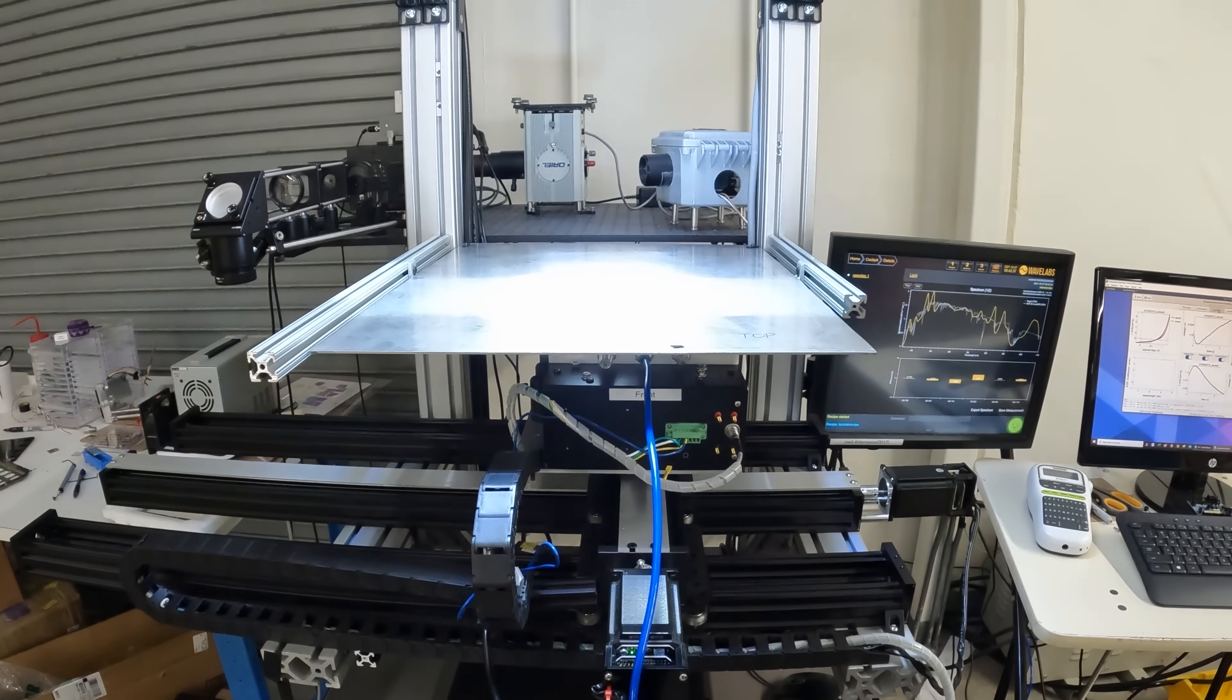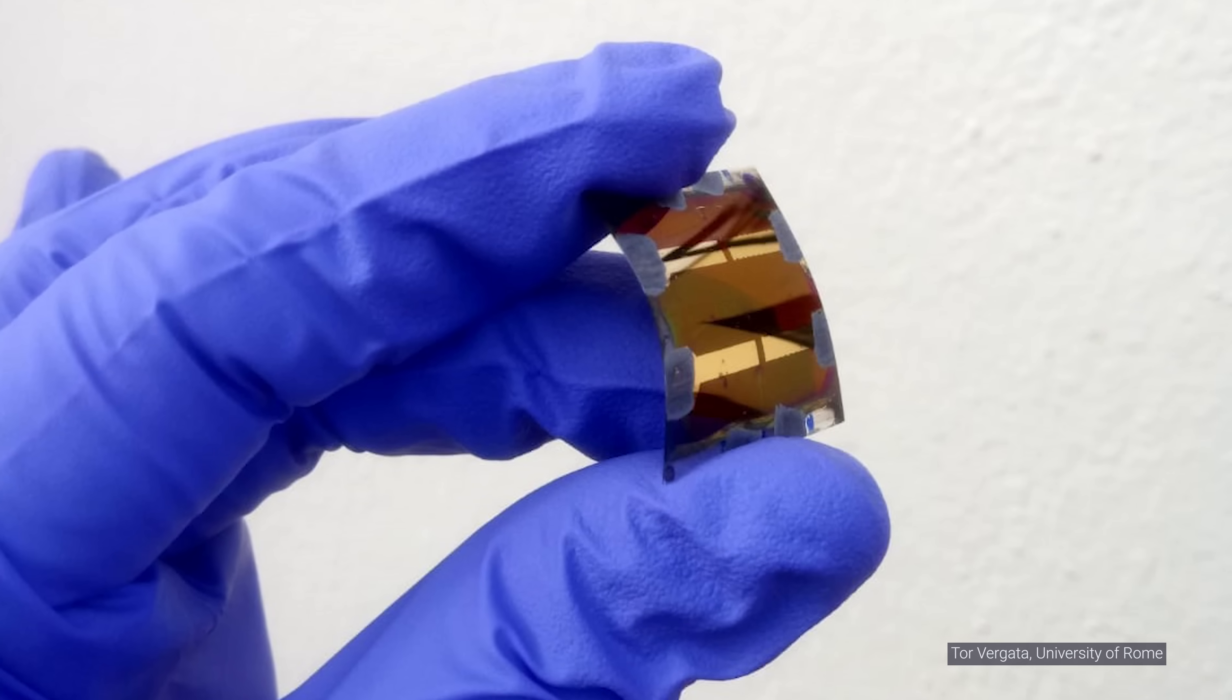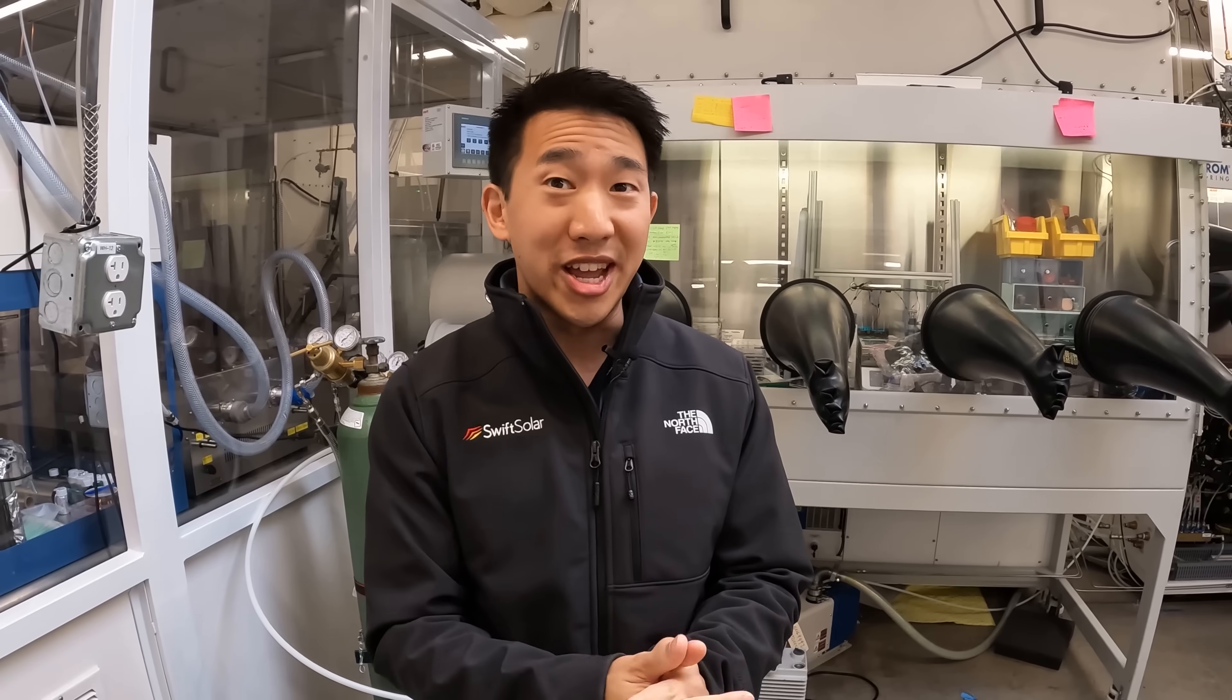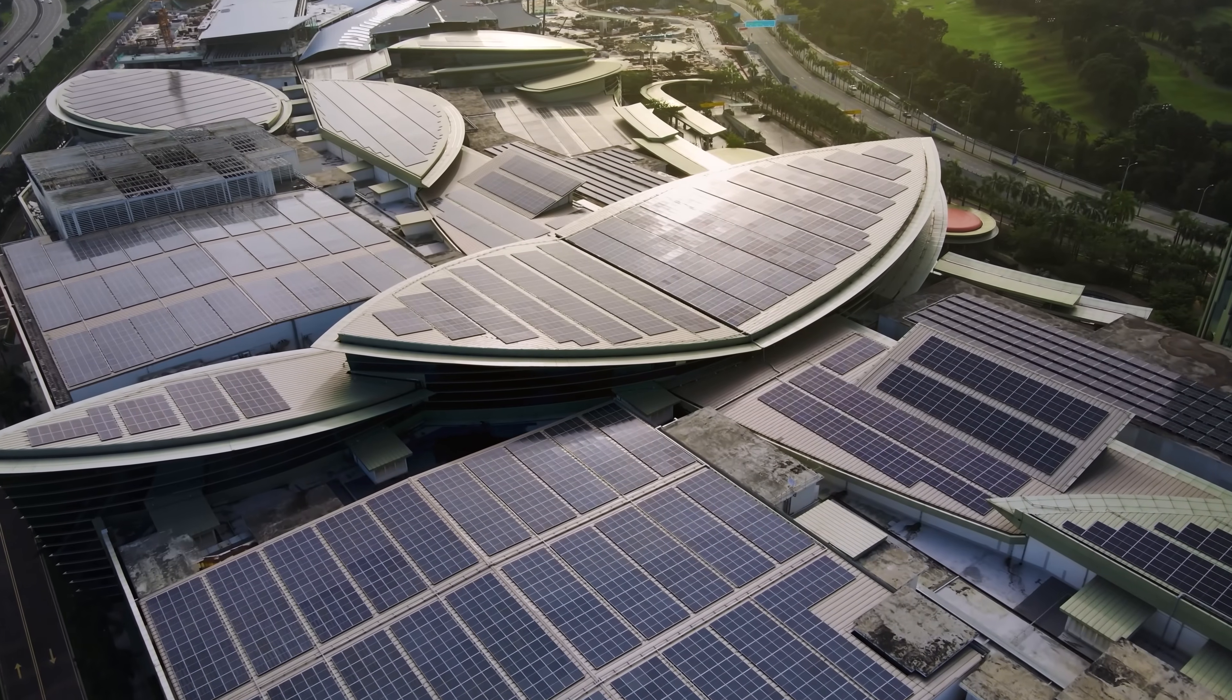Perovskites have improved greatly since scientists first began testing them and are now beginning to surpass mono and polycrystalline silicon cells in conversion efficiency. As perovskites start coming into commercial usage, where are we most likely to see them first? All the traditional solar applications on your rooftop, out in the field somewhere in the desert, on commercial rooftops, on residential rooftops, like those are all fair game down the line.